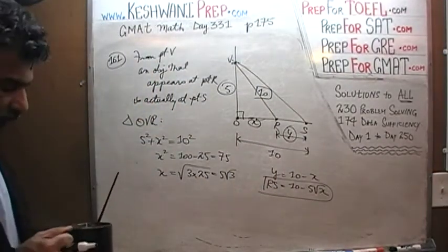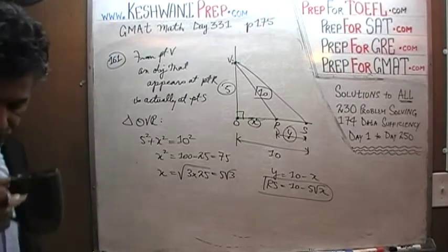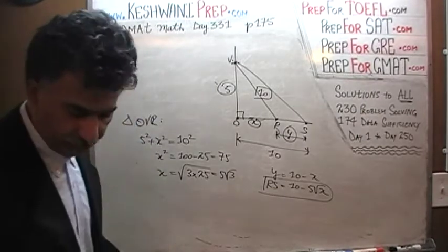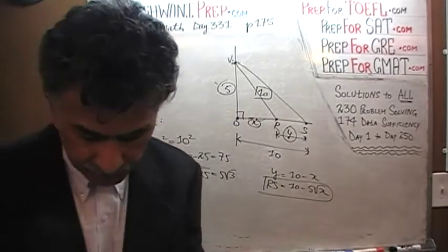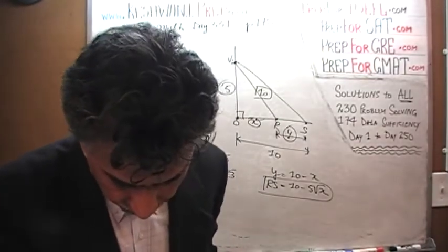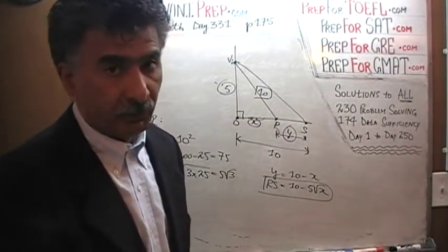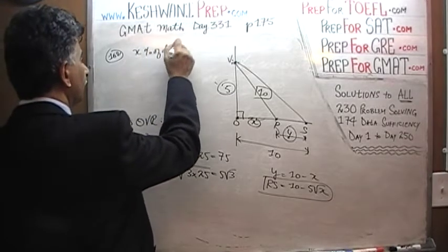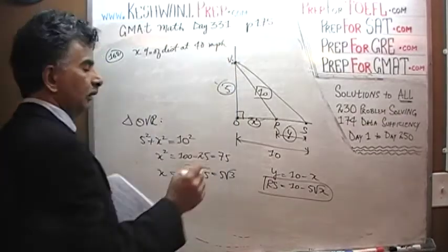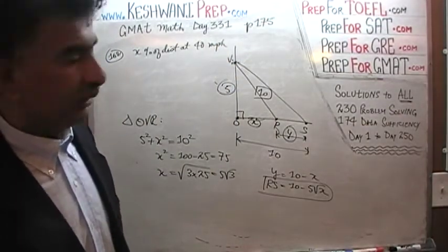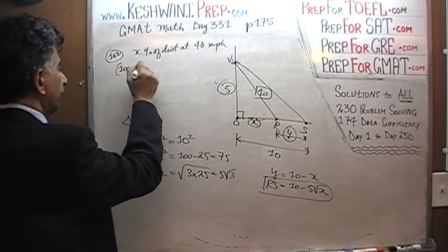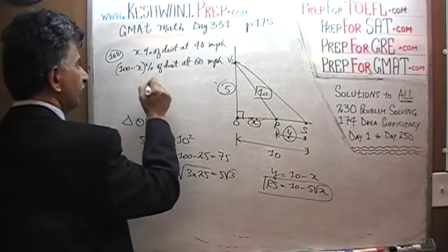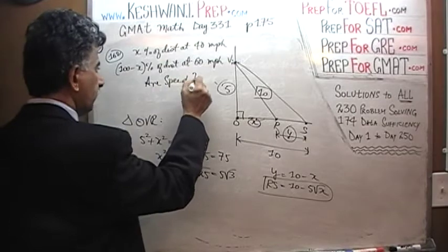Let's go on to the next problem, number 162. In 162, we are told we are going to make a journey where we travel X percent of the distance — not X percent of the time, but X percent of the distance — at 40 miles per hour. The rest, which is 100 minus X percent of the distance, we travel at 60 miles per hour. The question simply is: what's the average speed?